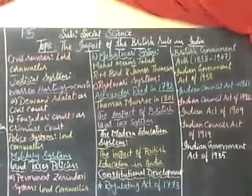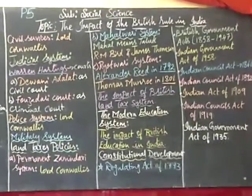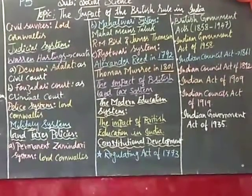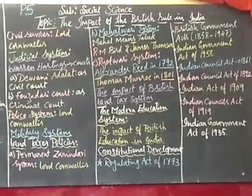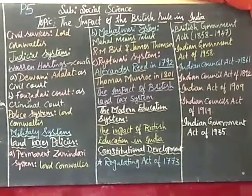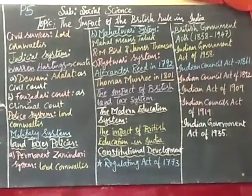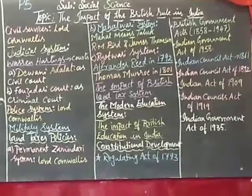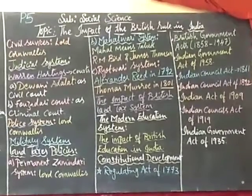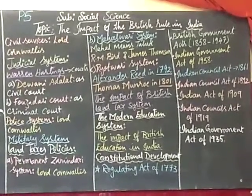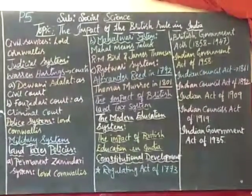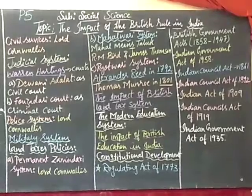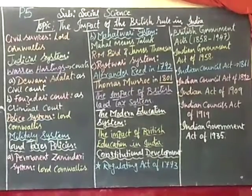Under the Charter Act of 1813, the Board of Directors had the power to appoint a new Governor General and the Commander in Chief. These people had the right to remove the Governor General and appoint a new one, and also to appoint a Commander in Chief officer to take care of trade.